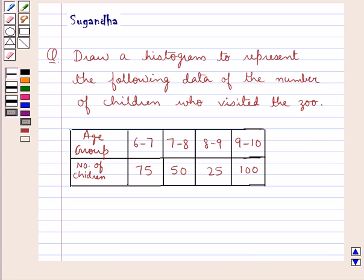Hello and welcome to the session. In this session we discuss the following question which says: Draw a histogram to represent the following data of the number of children who visited the zoo.